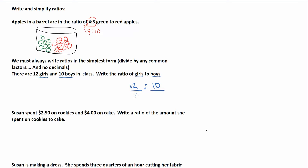If I divide 12 by two, I'll get down to six. If I divide 10 by two, I'll get to five. So that's my ratio of girls to boys, 6:5, in the simplest form.